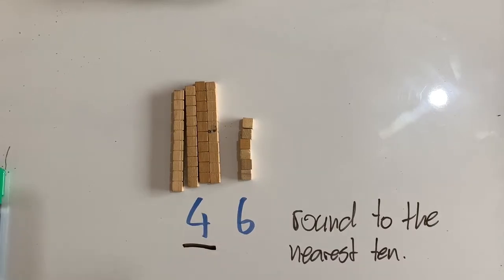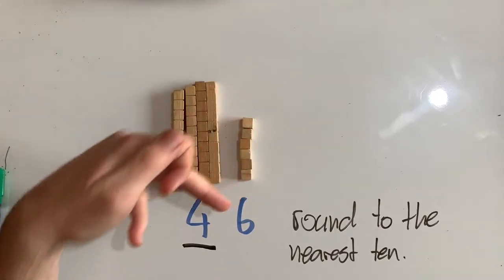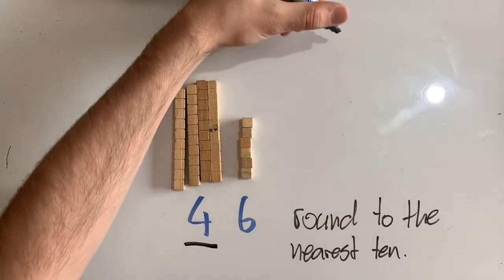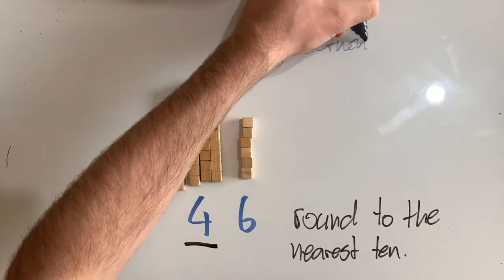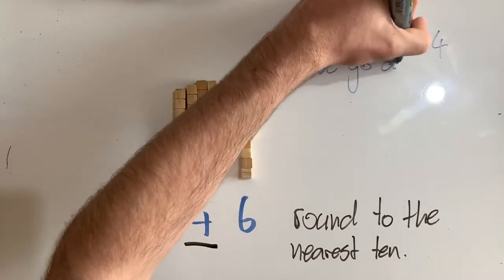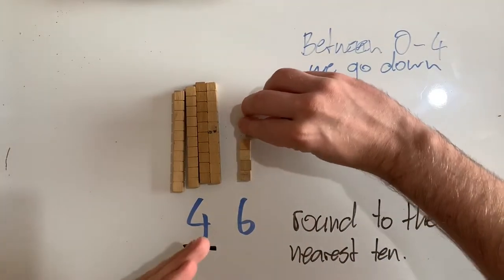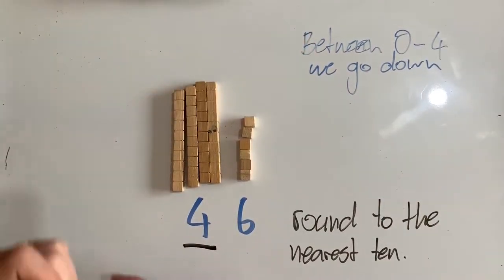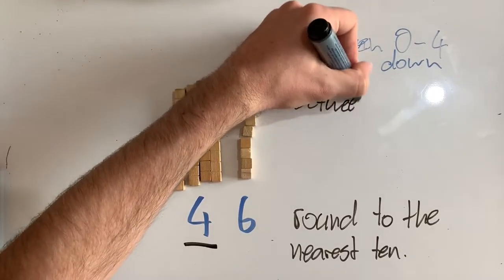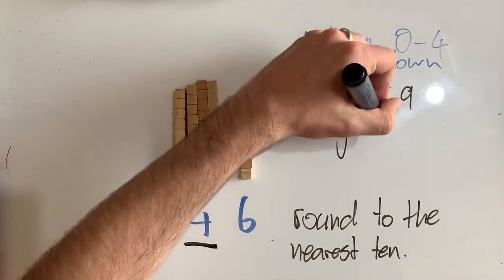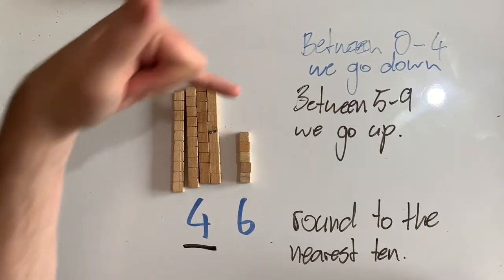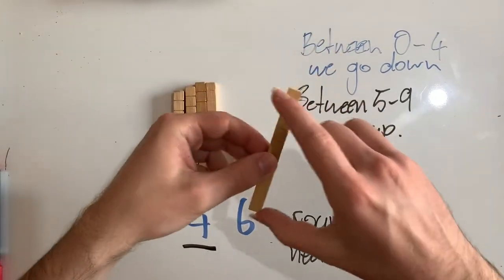So in that case, the units digit is a six. I need to decide if this digit is closer to the next 10 up or the 10 we've already got. So I'm deciding if it's closer to zero or closer to 10. If the digit is between zero and four, we go down to zero. If we have five or more — between five and nine — we go up to the next 10. Five is kind of a halfway point, but we count five as closer to the next 10 up than to zero.